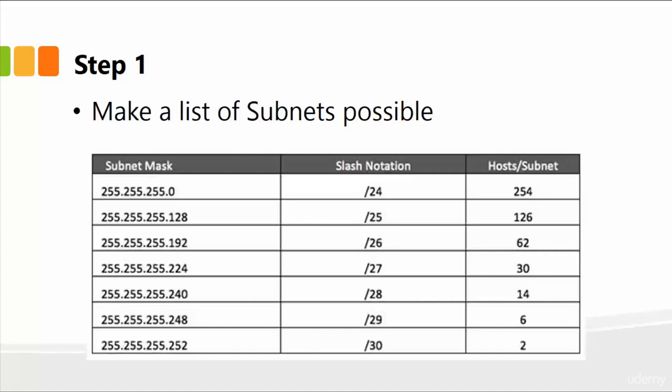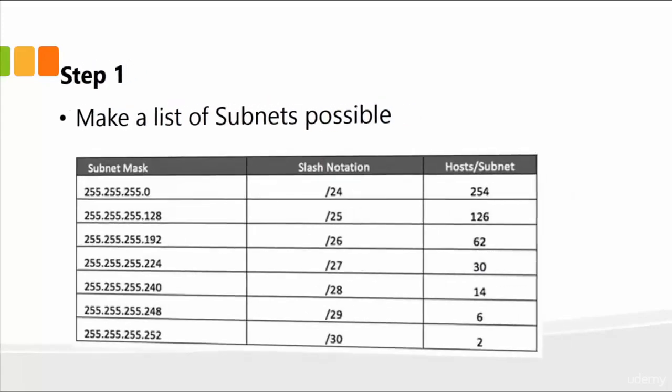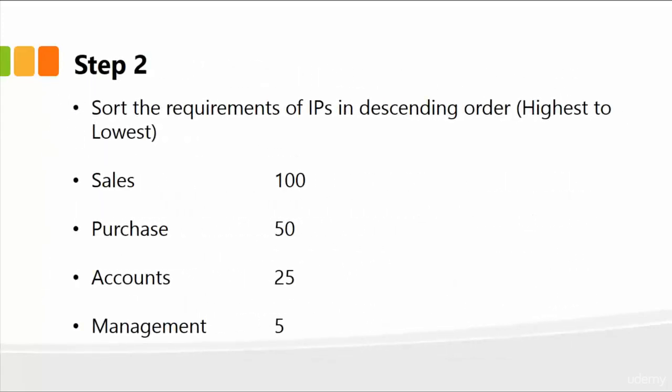In step two, we simply sort the requirements of the IP addresses in descending order, highest to lowest. Which department has the highest number of computers? Sales with 100. Next is the purchase department with 50 computers, accounts has 25, and management has five. So just create a simple descending order list.